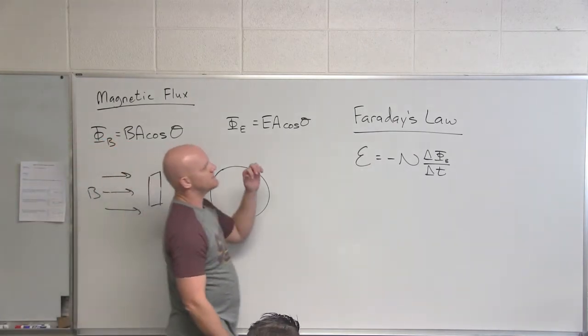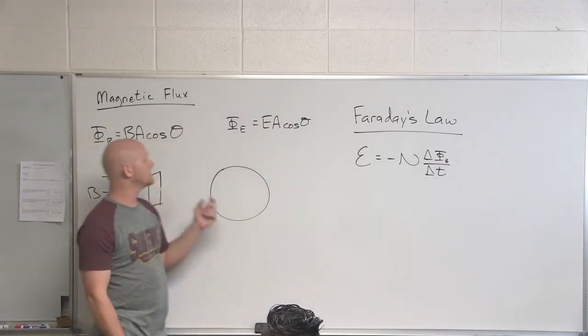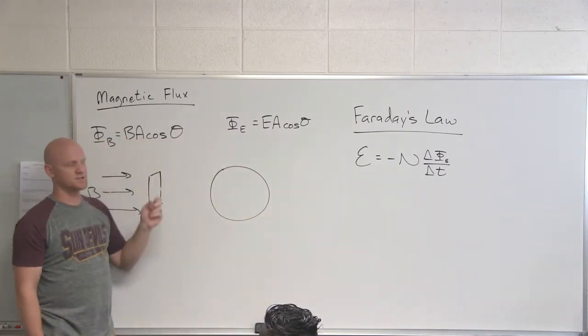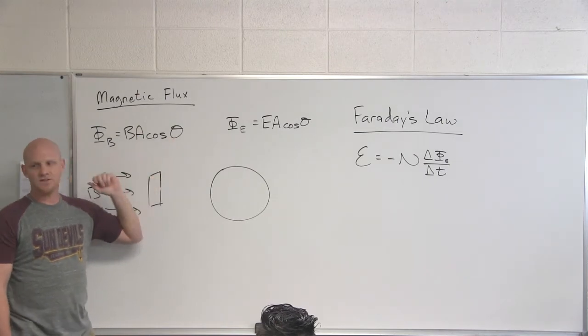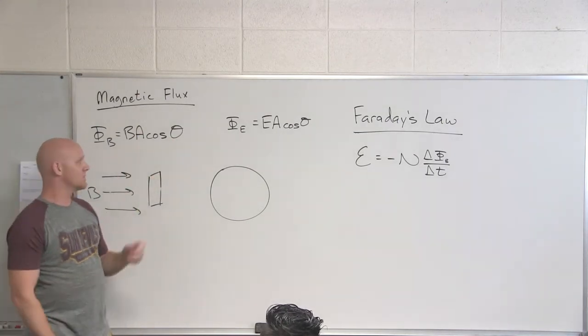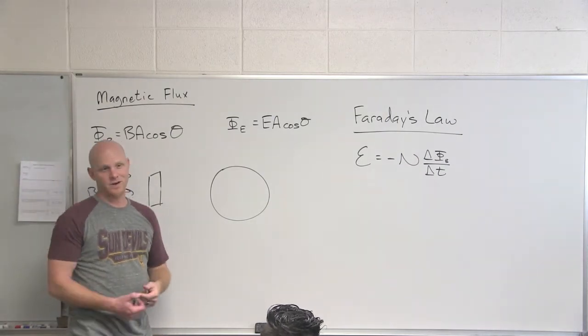Cool. So, one thing to keep in mind, it's not enough to have a flux, you've got to have a changing flux, and you can change that in three main ways. Change the strength of the magnetic field, change the area of your loops, or change the angle. We'll find out that changing the angle is a great way to set up a generator, like an alternating current generator.